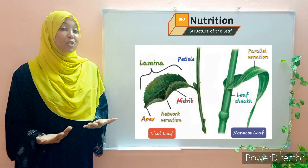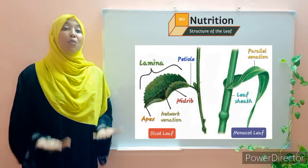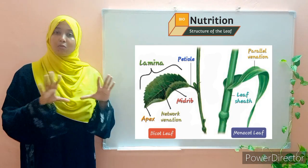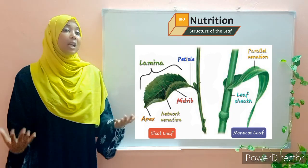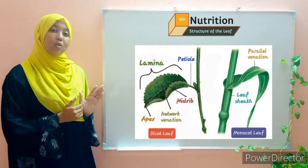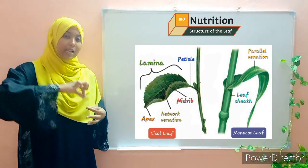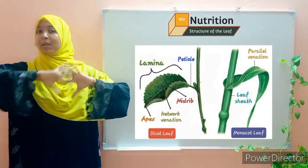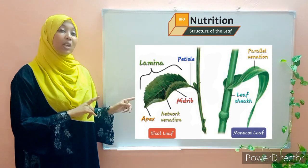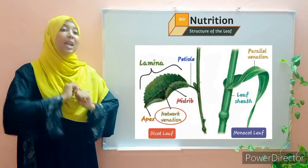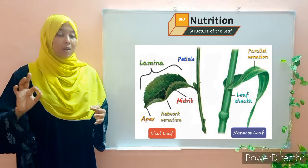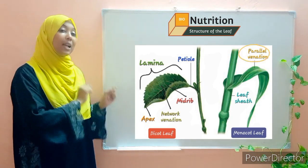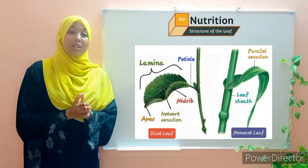The veins are very important because their main function is transportation of substances, but the arrangement of veins differs among classes of plants. In dicots, a thick midrib runs through the center with smaller veins branching away, forming a network — known as network venation. In monocots there is no midrib; veins are arranged parallel to one another, known as parallel venation.